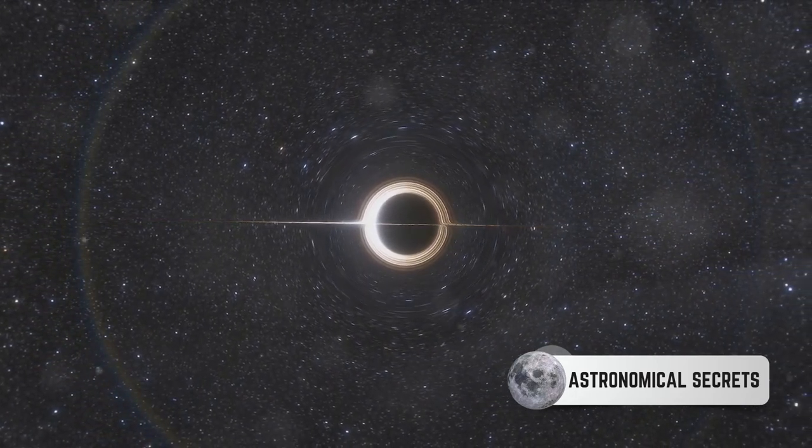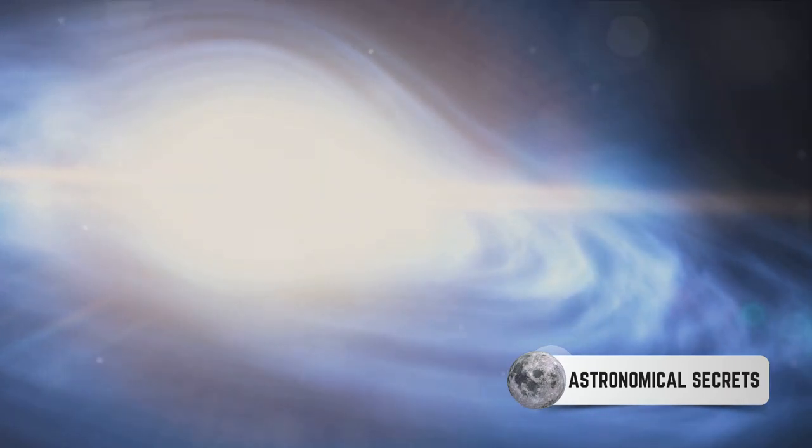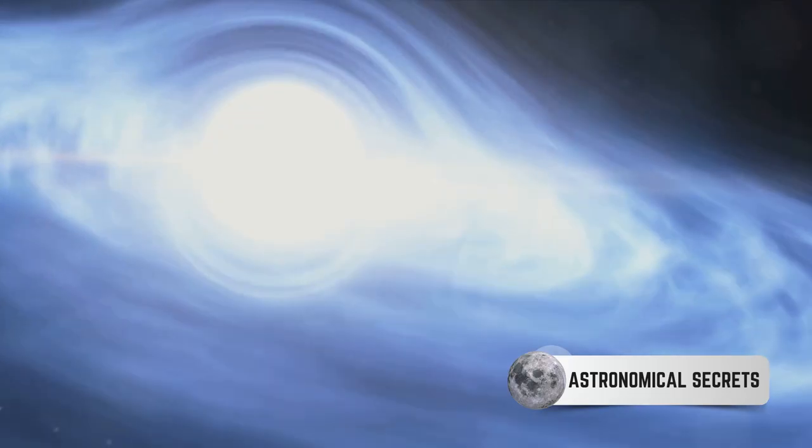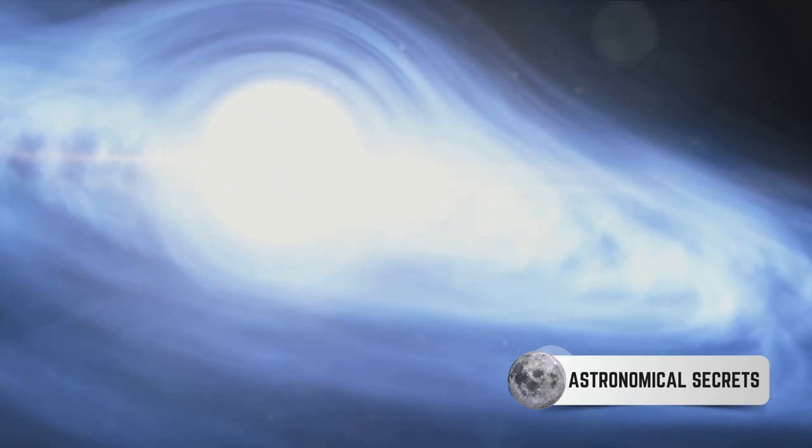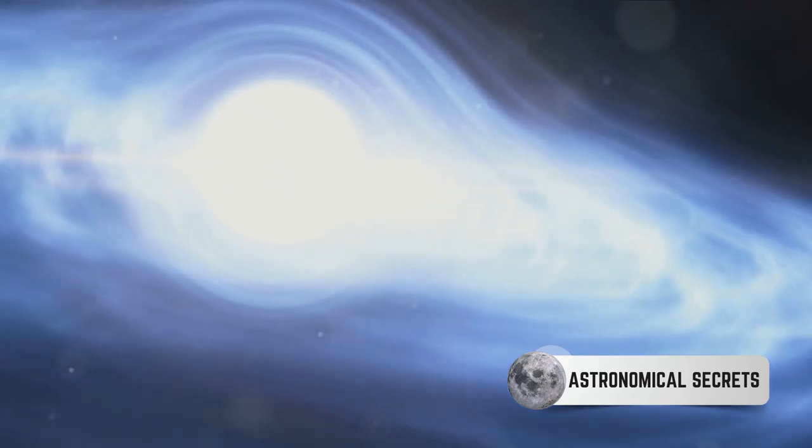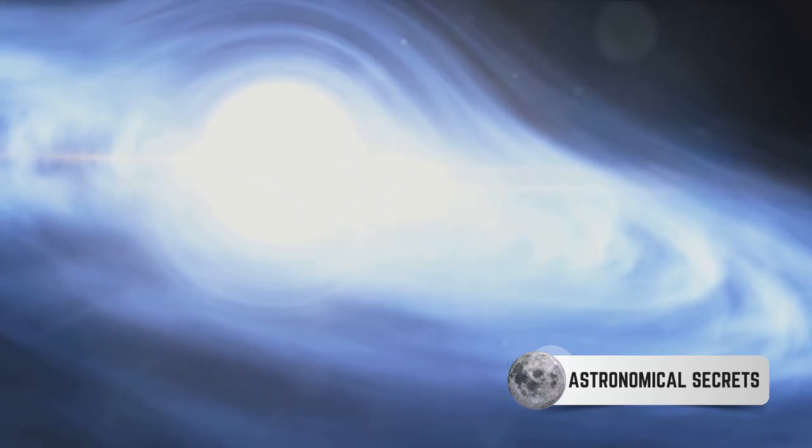And then we have quasars, the brightest objects in our universe, which wouldn't exist without accretion disks. Quasars are essentially supermassive black holes that are feeding on material from accretion disks. As this material spirals into the black hole, it heats up and emits an enormous amount of energy, creating a quasar.